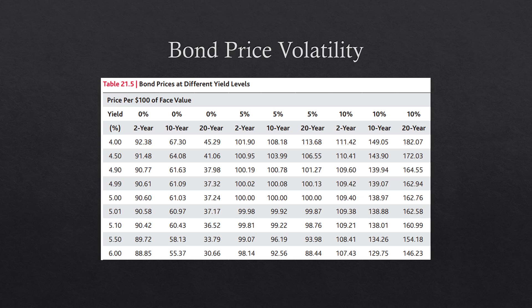Looking at bond price volatility: consider a bond with a yield of five percent — a ten-year bond. If interest rates increase to six percent, you can now buy a bond paying a six percent coupon, so your five percent bond is no longer worth as much and its price decreases to about $92.56. On the other side, if rates drop to four percent, your bond increases in value to $108.18. Bonds have that inverse relationship with interest rates and bond yields.